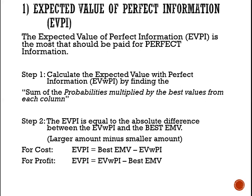Two steps in this process. Step 1: calculate the expected value with perfect information. The expected value with perfect information tells us what the expected value would be if we had perfect information, and this is the sum of the probabilities multiplied by the best values from each of the associated columns. Step 2: we calculate the EVPI as the absolute difference between the expected value with perfect information and the best EMV calculated from the expected monetary value. The absolute difference just means when we subtract, we ignore any negative signs.